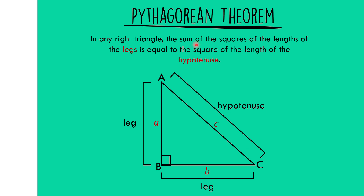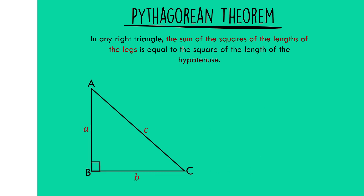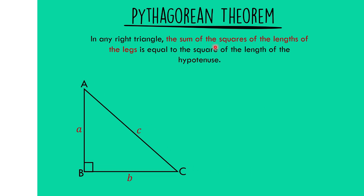Under the Pythagorean theorem, it states that the sum of the squares of the lengths of the legs — A squared plus B squared — is equal to the square of the length of the hypotenuse. Side AC is the hypotenuse, or small letter C. So A squared plus B squared is equal to C squared.